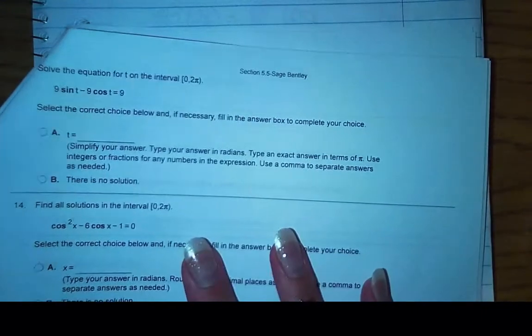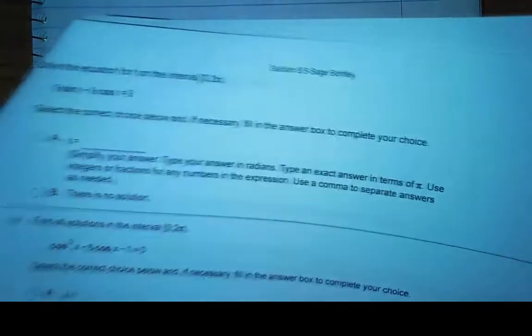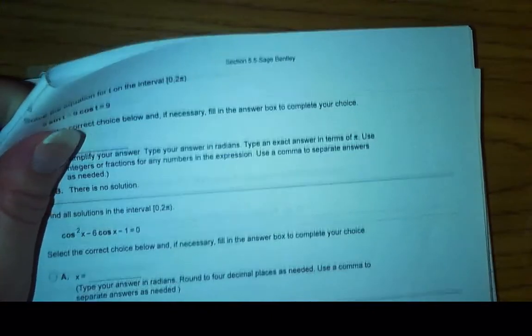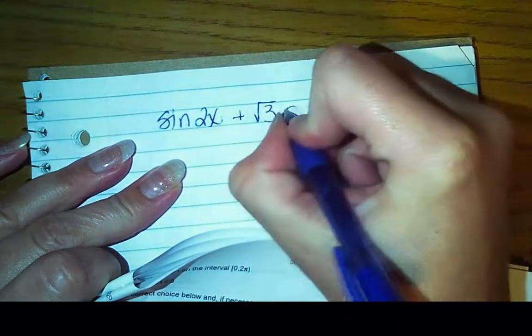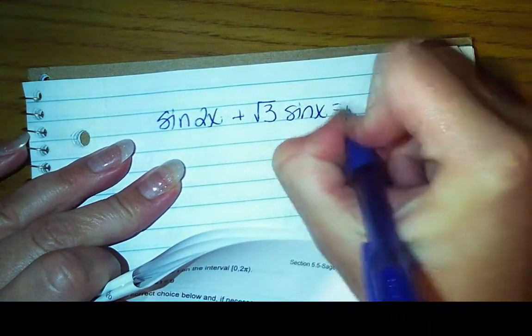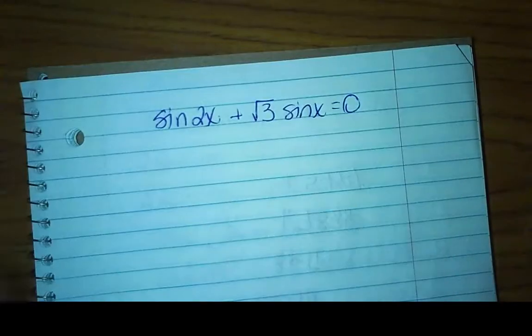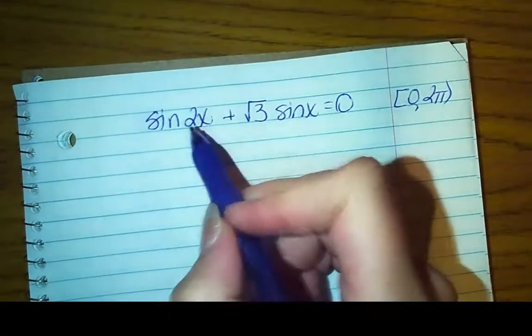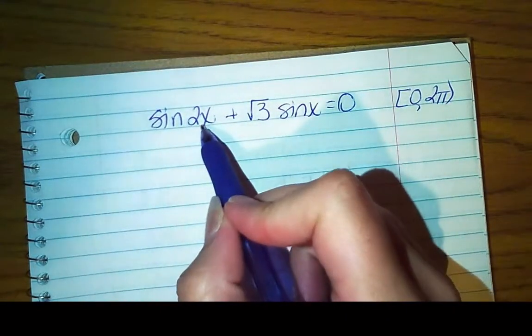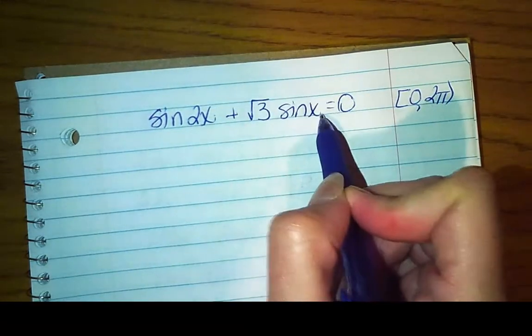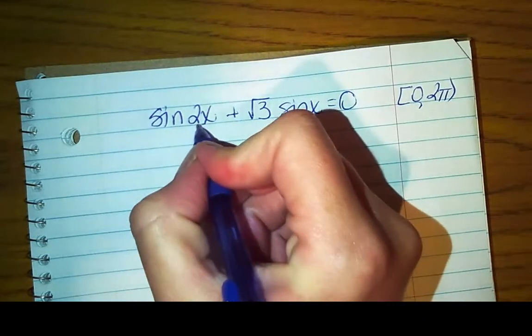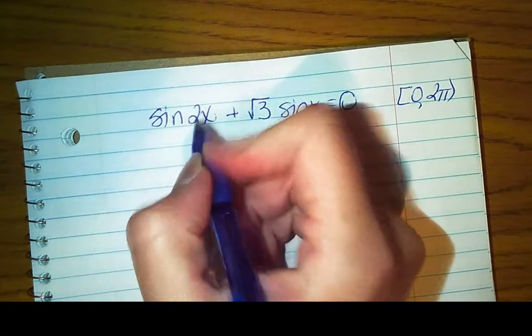For number 15, we have sin(2x), so the sine of 2x, and then plus √3 sin(x) equals 0. So again, the very first thing I notice, and I'm within one lap of the unit circle. So the first thing I notice is that my arguments don't match. This is 2x, this has 1x. But everything is in terms of sine.